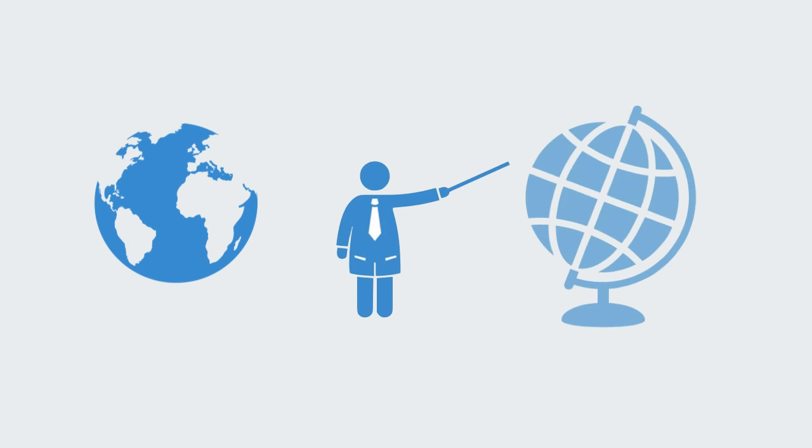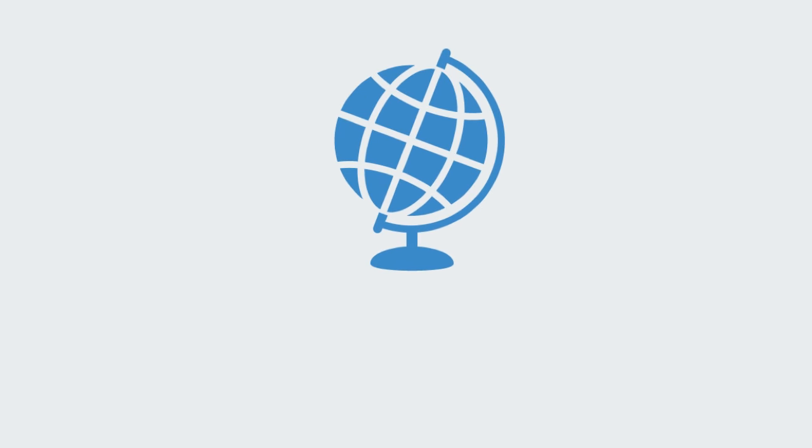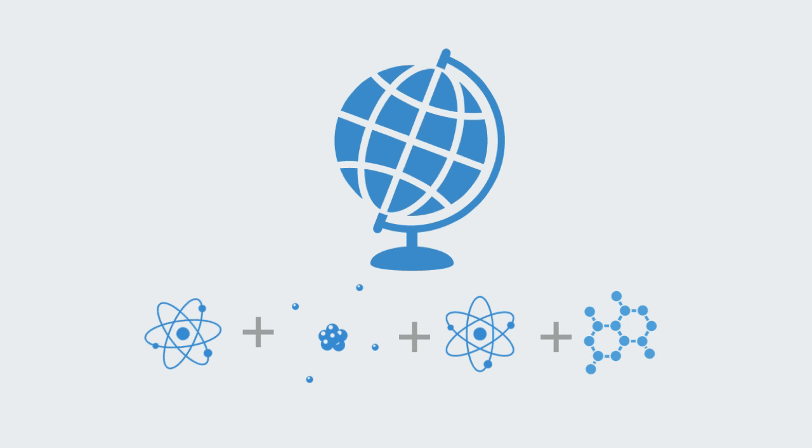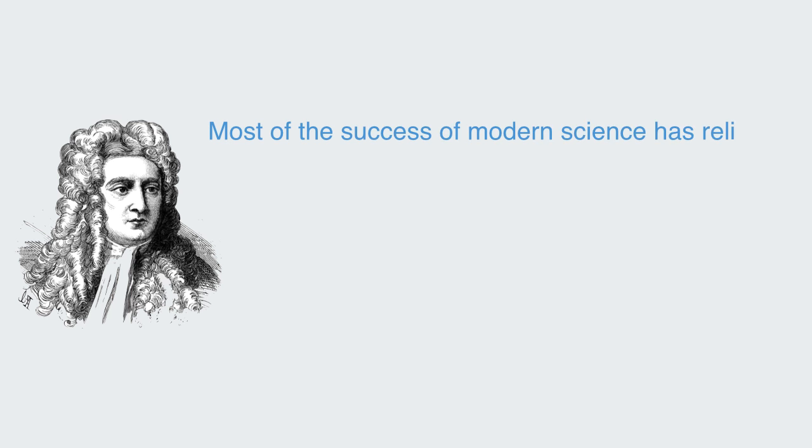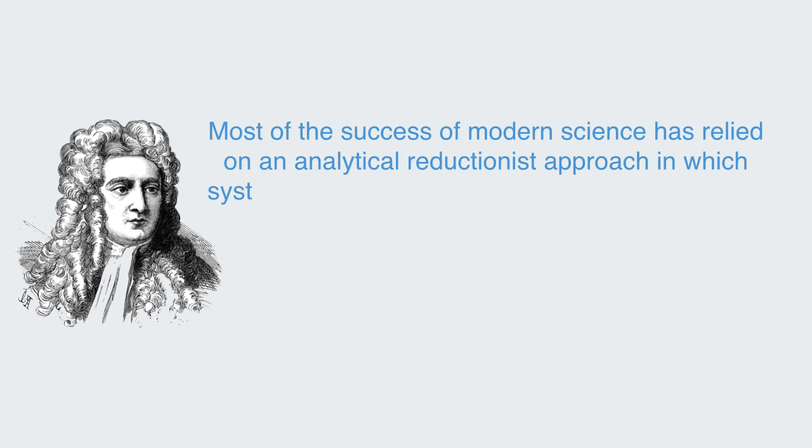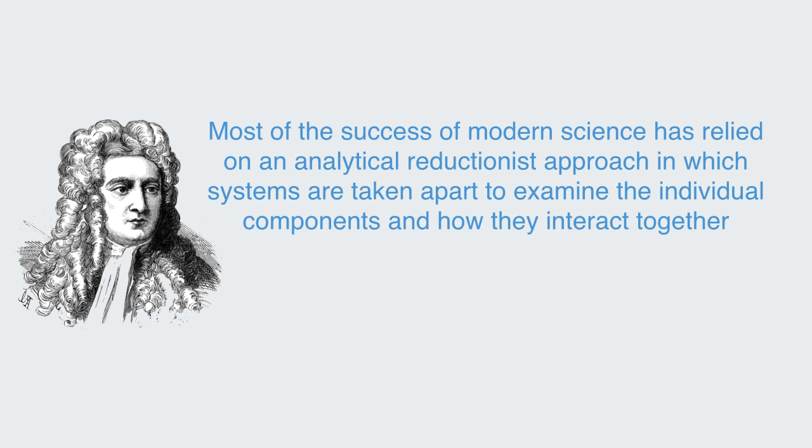Traditionally in modern science when looking at macroscopic features of a given system, scientists have tried to find the origin of these phenomena by looking at the structure and properties of their component parts. By breaking the system down and then describing it as some linear combination of the parts, this process of reasoning is called analysis. Most of the success of modern science has relied on an analytical reductionist approach in which systems are taken apart to examine the individual components and how they interact together.